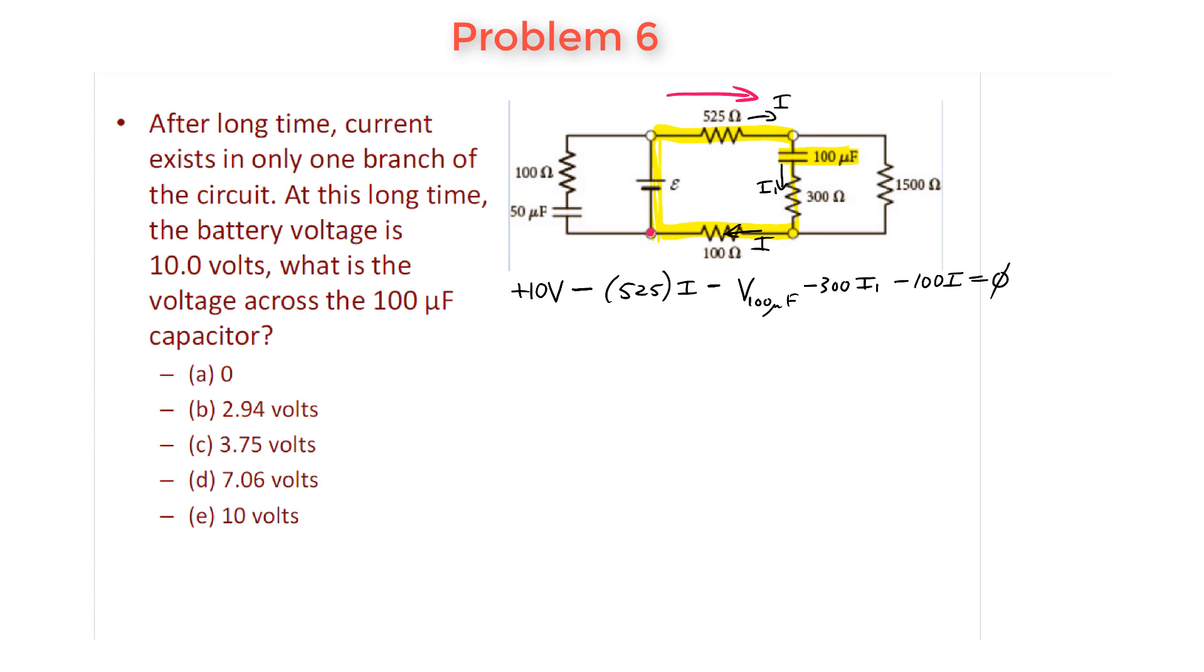And if I go back to where I start, that should be equal to zero. I can simplify this a little bit because I can combine the 525 with 100 ohm. So this expression here becomes 10 minus 625 multiplied by I minus 300 times I1 equals to the voltage across the 100 microfarad capacitor.